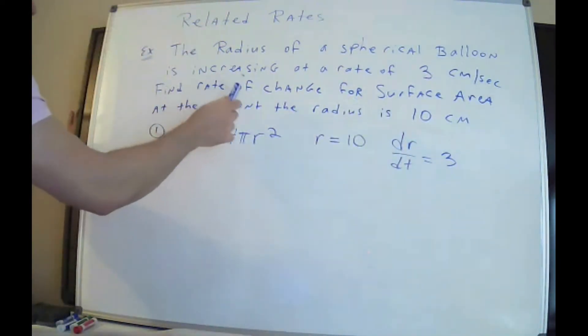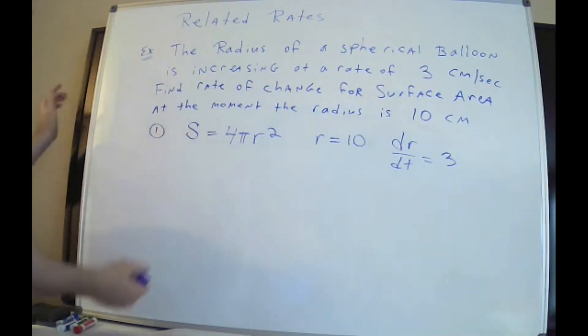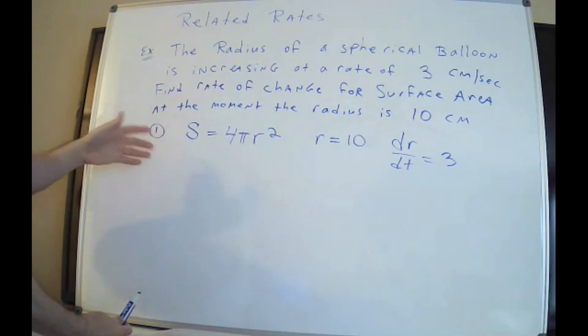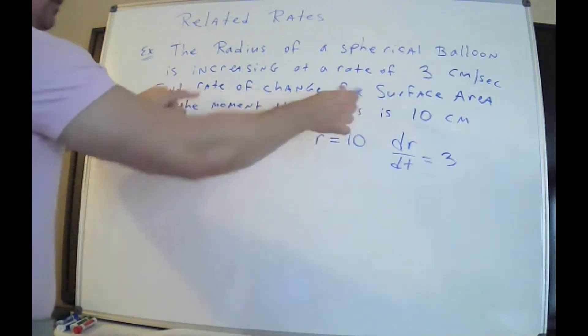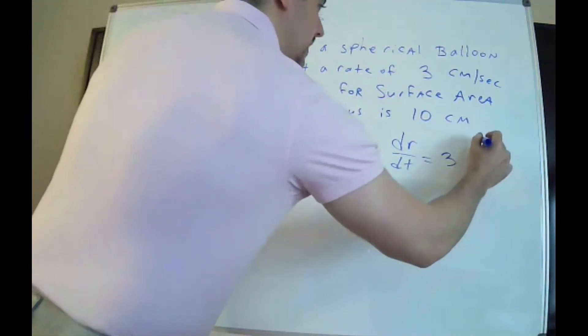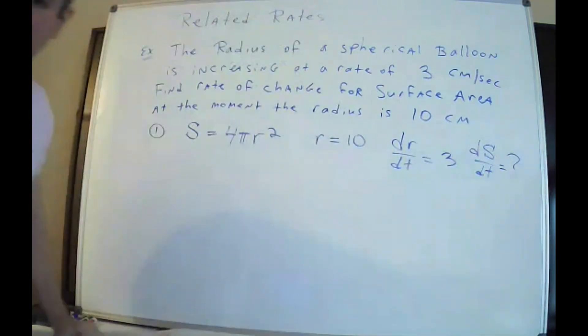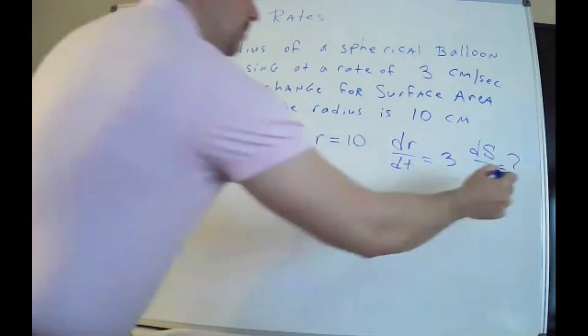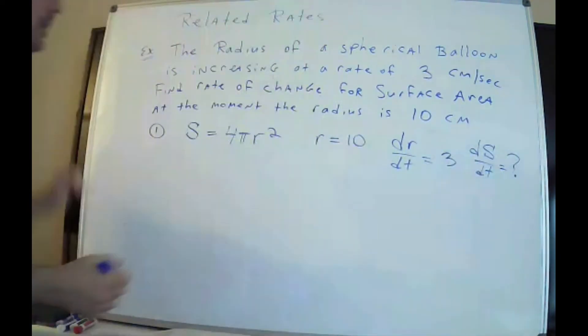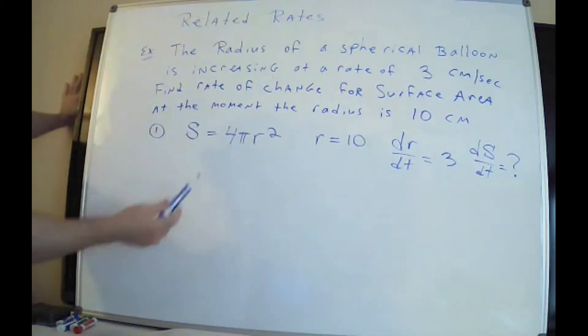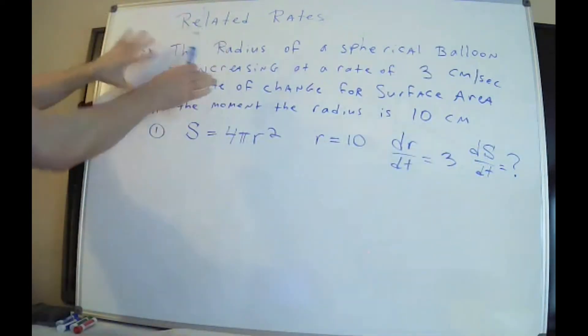The radius is changing. That's what this represents. dr/dt means that the radius is changing over time. If you don't have this, you're not going to be able to solve the problem. Now, find the rate of change for the surface area. At some point when I do my derivative, I'm going to end up with dS/dt. This is what they want. The rate of change of the surface area is dS/dt.